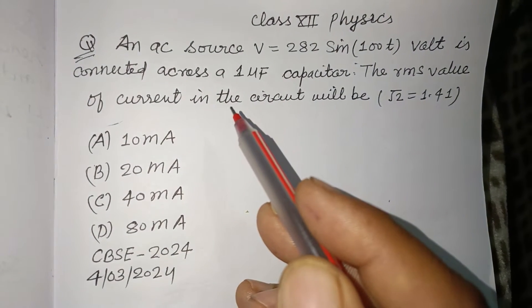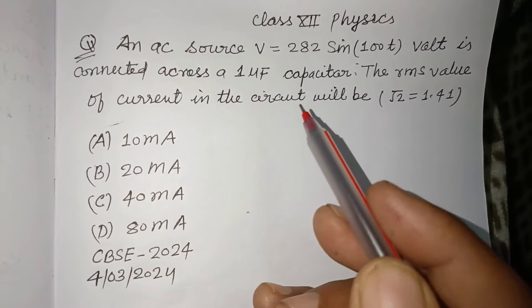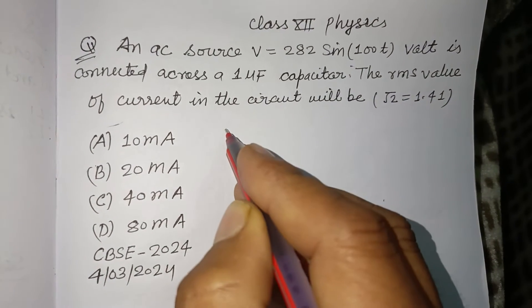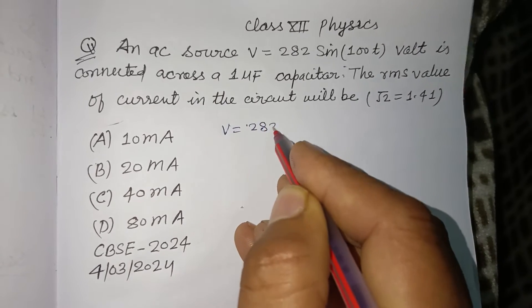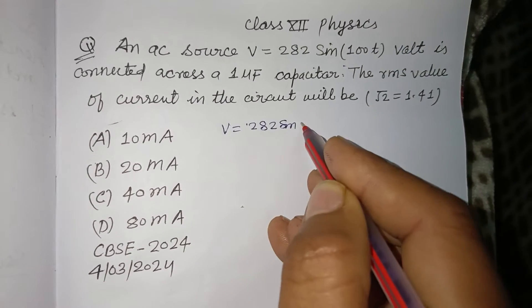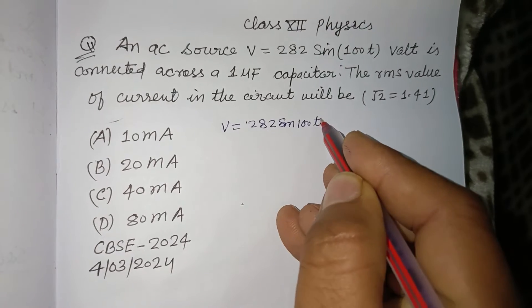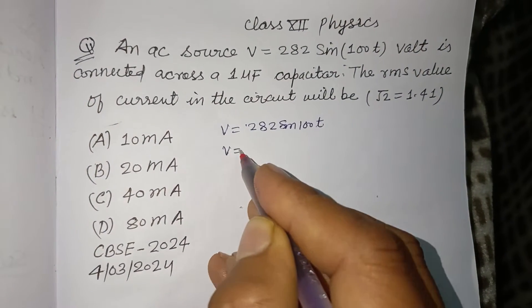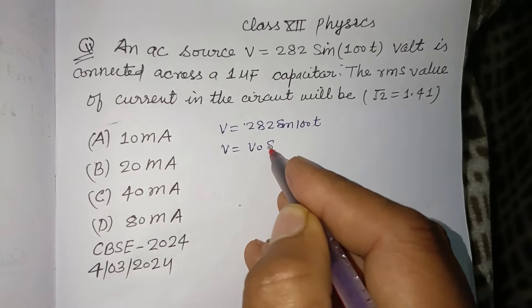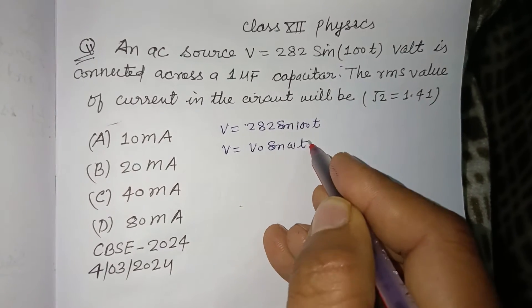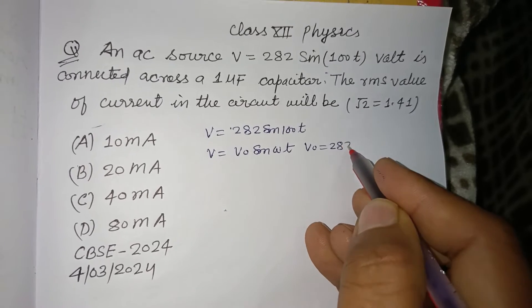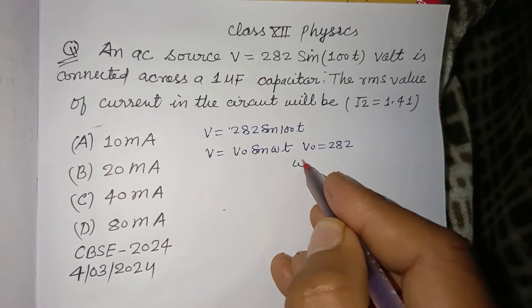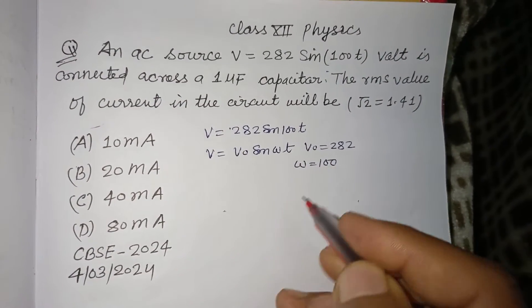The RMS value of current in the circuit will be? Here, V = 282 sin(100t) is given. Comparing this with V = V0 sin(ωt), we get V0 = 282 volts and ω = 100 rad/s.